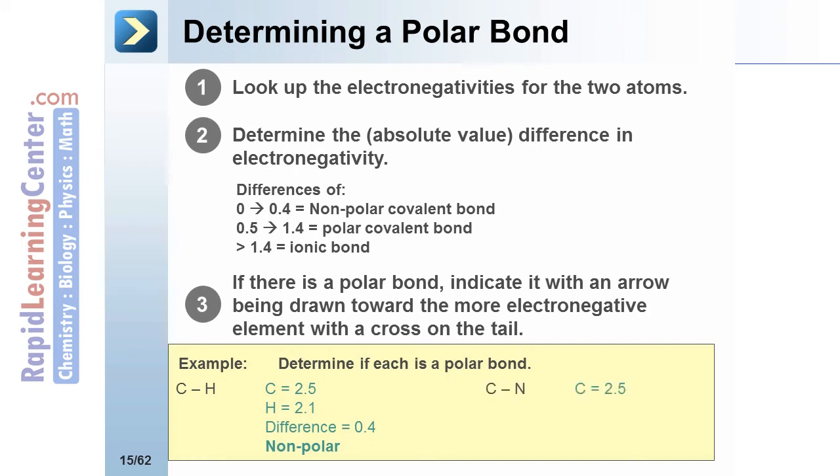Carbon and nitrogen. Carbon is 2.5. Nitrogen is 3.0. The absolute value of this difference is 0.5. It is a polar bond. The arrow is drawn towards the more electronegative atom, and the cross is used on the more positively charged atom in the polar bond.